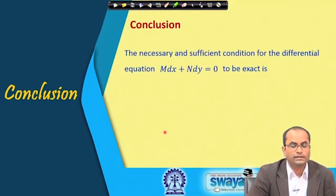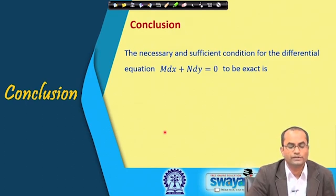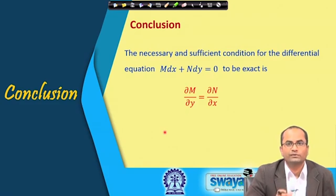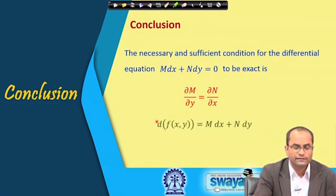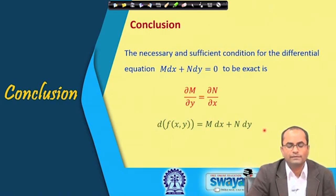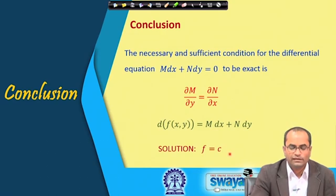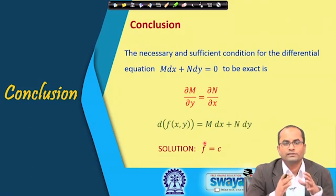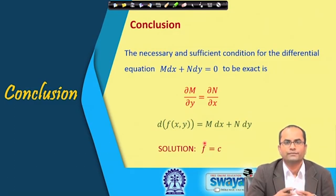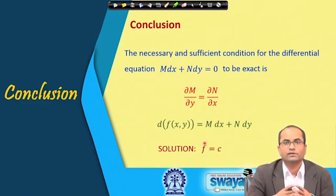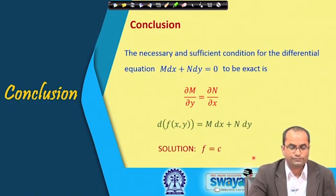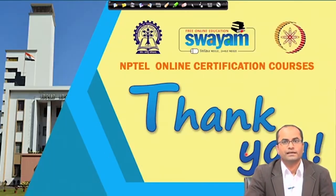In conclusion: the necessary and sufficient condition for M dx + N dy to be exact is ∂M/∂y = ∂N/∂x. Once exactness is confirmed, we find f whose differential is M dx + N dy, then write the solution as f = c. In the next lecture, we will discuss what method to use when the given differential equation is not exact. These are the references used. Thank you for your attention.